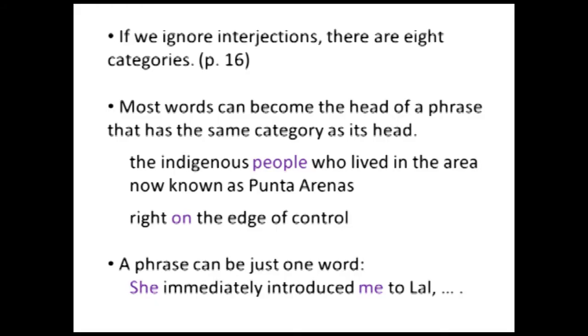Take this sentence: 'She immediately introduced me to Lao.' The subject of the sentence — this is a function, not a class — is filled by a noun phrase, and the whole phrase is just the word 'she.' The word 'she' is not only a noun, it's a noun phrase. The word 'me' also doesn't have any dependents — it's a noun and it's the whole noun phrase. A verb phrase can also be just one word, and a prepositional phrase can certainly be just a preposition; they don't always have dependents.